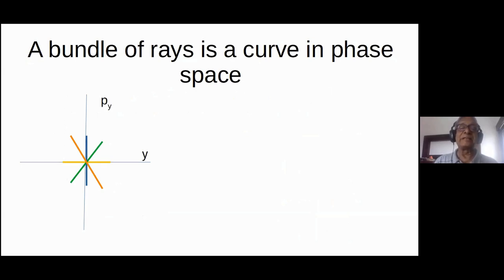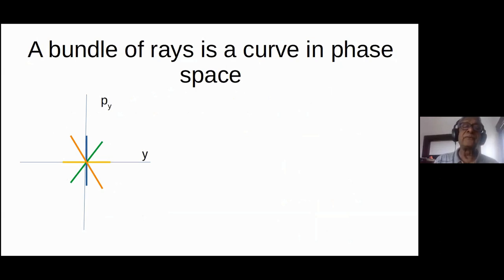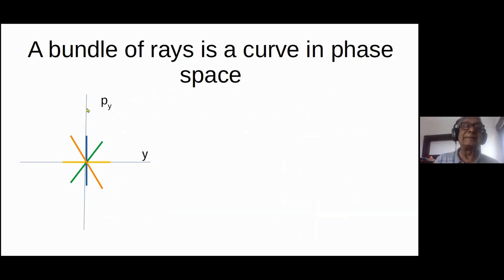One of the advantages of phase space is you don't have to trace single rays one by one. If you have a family of rays, you can think of all members of the family at the same time and apply a transformation. I've labeled the vertical axis as p_y like momentum, but this is nothing but theta — I must have had the optics-mechanics analogy in mind.